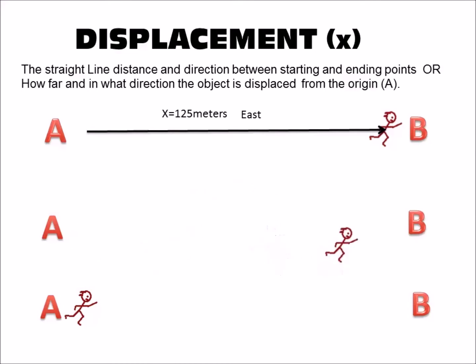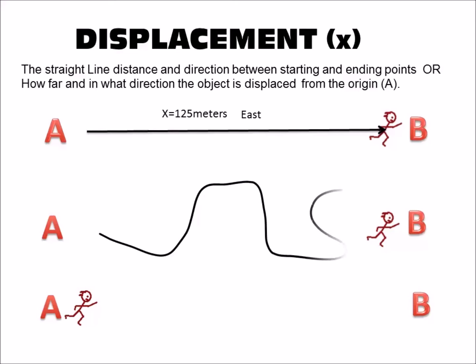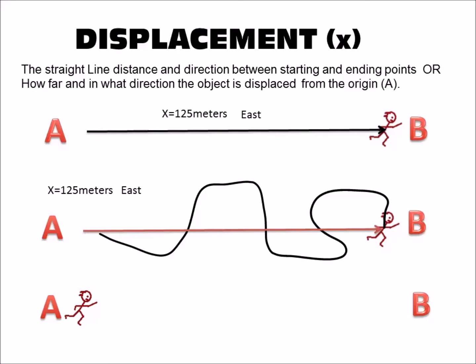The second runner traveled in a curved path from A to B. His distance was 200 meters. But his displacement is 125 meters east. Why? Simply because displacement is the straight line distance and direction between the starting and ending points.